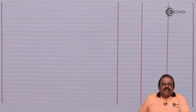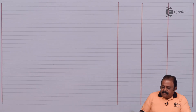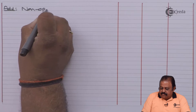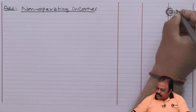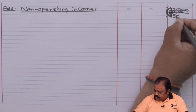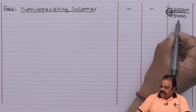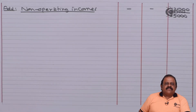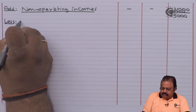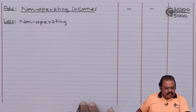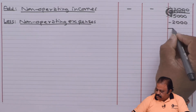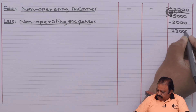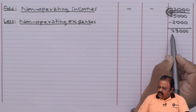To the operating net profit we add non-operating incomes. After adding non-operating income it becomes 75,000. From this we subtract non-operating expenses and losses of 2,000, giving 73,000.